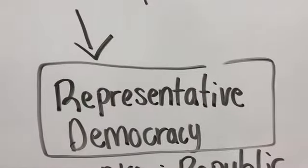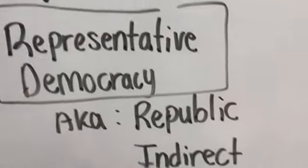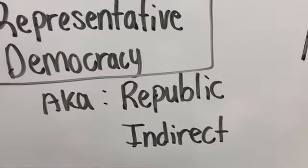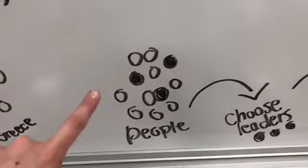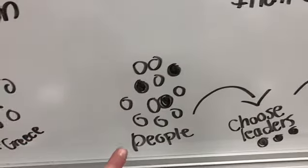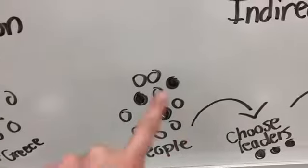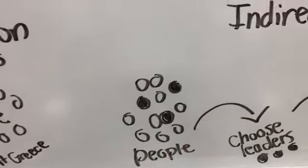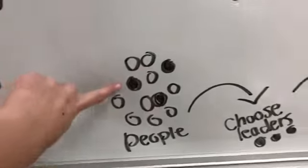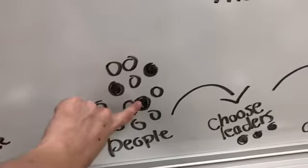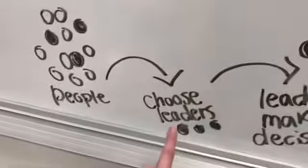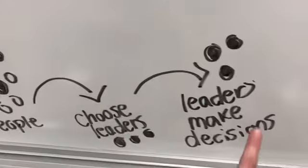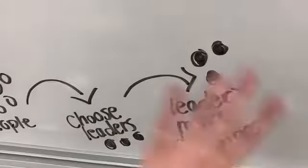A representative democracy — also known as a republic, or an indirect democracy. In a representative democracy, people still have the power. But the difference is all of these people are not going to make the decisions directly. They are going to elect leaders — they choose the leaders — and then those leaders are going to make the decisions for the people.